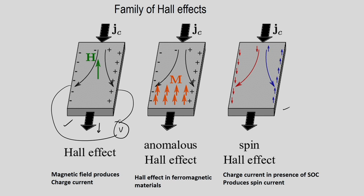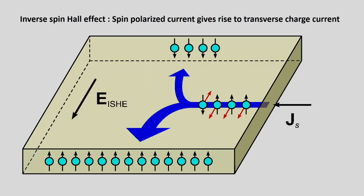In the rightmost cartoon, spin selection takes place: down spins (shown in red) accumulate at the left edge of the sample. The spin Hall effect: charge current J_c in the presence of spin-orbit coupling produces a spin current. The inverse spin Hall effect (ISHE): a spin-polarized current J_s produces a transverse charge current.